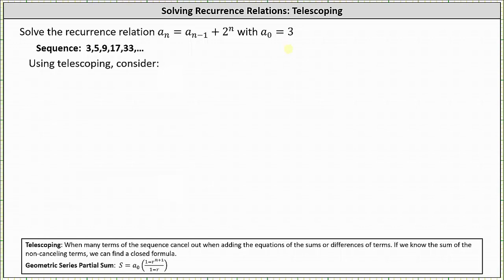We know a_0 is equal to three. a_1 is equal to a_0 plus two to the first, which is three plus two, or five. a_2 is equal to a_1 plus two squared, which is five plus four, which is nine. a_3 is equal to a_2 plus two cubed, which is nine plus eight, which is 17, and so on.